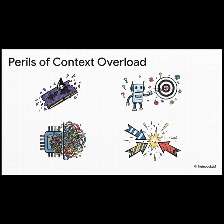When that memory overloads, things go wrong in some really specific ways. First, you can get context poisoning — that's where one tiny mistake, one little hallucination, gets stuck in its memory and corrupts everything that comes after. Then there's context distraction, where the agent gets so buried in noise and details that it literally forgets what it was supposed to be doing. This leads to confusion from all the extra stuff, and eventually clash, where it finds contradictory info and the whole process just grinds to a halt.